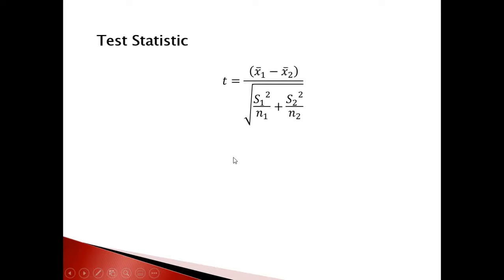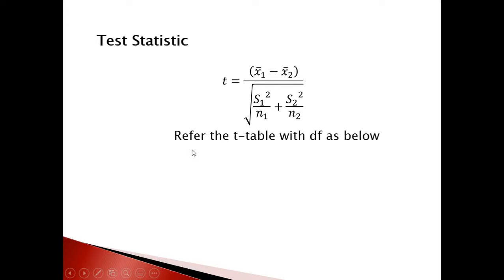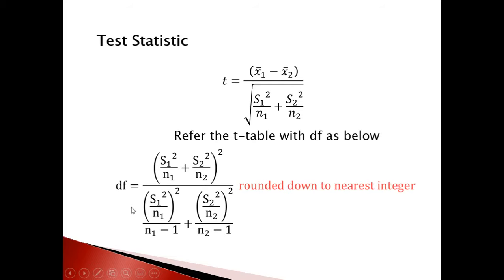The test statistic t equals x̄₁ minus x̄₂ divided by the square root of s₁² over n₁ plus s₂² over n₂. Then use the t-table with the degree of freedom calculated from the degree of freedom equation — plug in s₁, s₂, n₁, n₂ and round down.